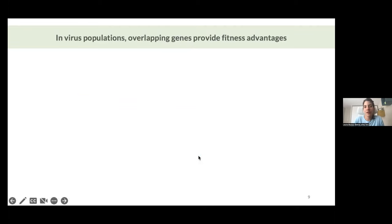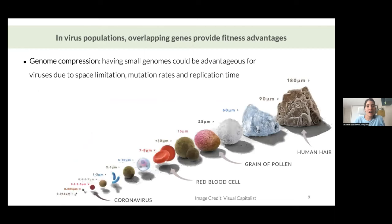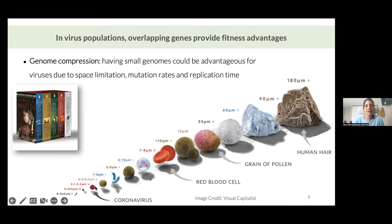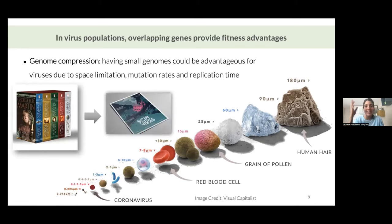Why are viruses using overlapping reading frames? You have to keep in mind that viruses are very, very small. If this is, for example, a pollen grain, then we have here our red blood cell, and very tiny here we have the coronavirus, and then bacteriophages that are even smaller. So viruses don't have much space. You can think about it like if humans have the entire saga of Game of Thrones to have information to exist — well, viruses could have maybe a pamphlet. They need to have a lot of information in tiny packages, and overlapping reading frames allow them precisely that: in a smaller genome, they can produce more proteins if they are overlapping.